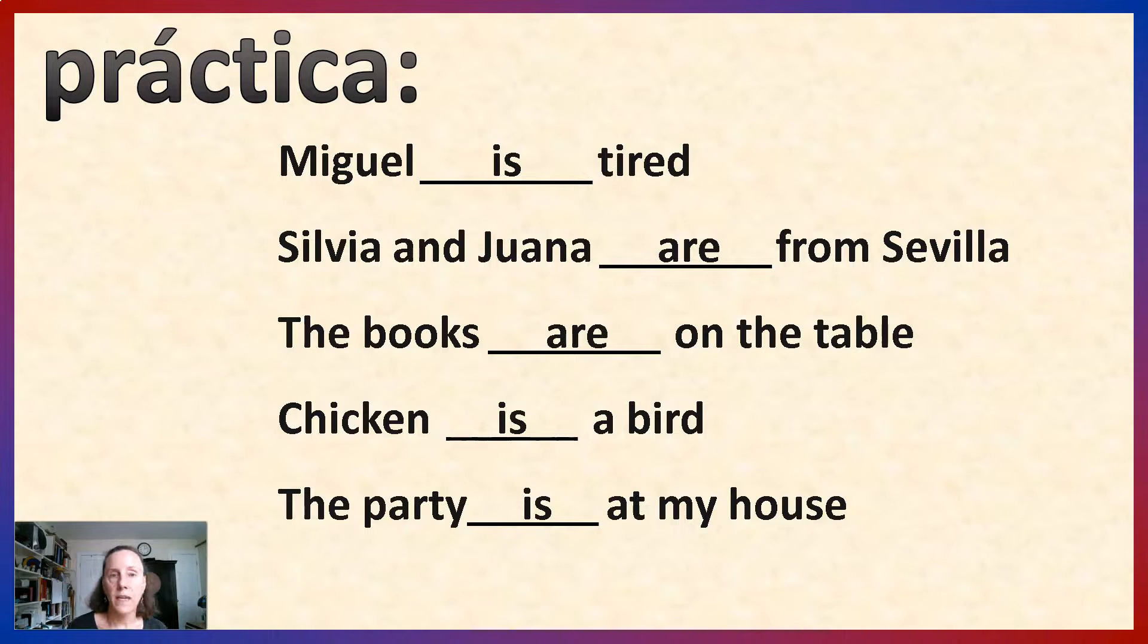This is how Miguel is. So, this is está. Silvia and Juana are from Sevilla. This is not where they are or how they are or condition. Therefore, this is ser.